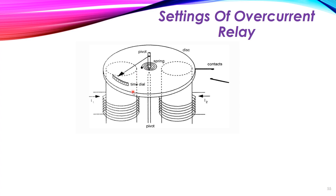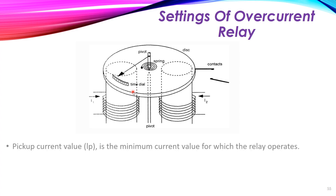To understand the settings of the overcurrent relay, we need to understand some definitions. The first is the pickup current, sometimes written as ib. This is the minimum current required for the relay to operate — the current that produces a torque value exceeding the spring torque in order to rotate the disk.